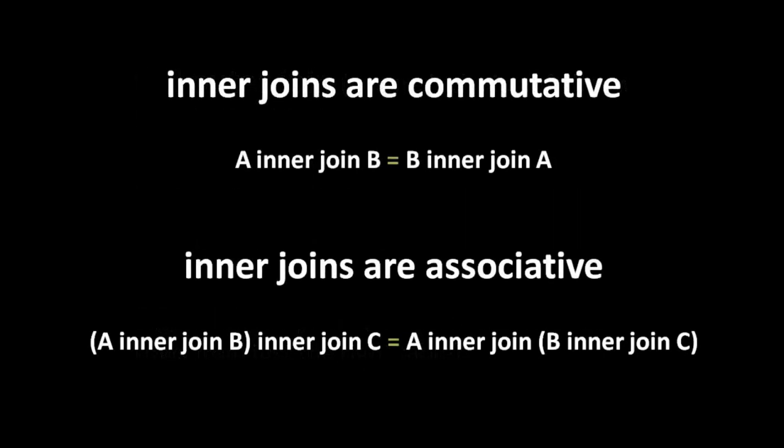Inner joins and cross joins are both commutative and associative. Commutative means the order of operands doesn't matter, so A inner join B is the same as B inner join A. Associative means when you chain a succession of operations together, the order doesn't matter - so if you inner join A, B, and C together, it doesn't matter if you join A and B first or B and C first. With inner joins and cross joins, the order doesn't matter.